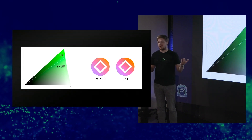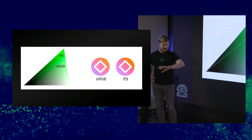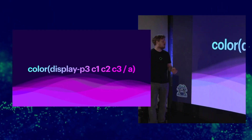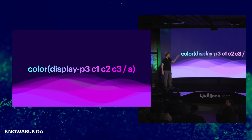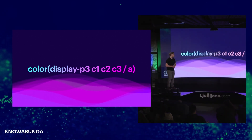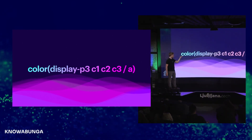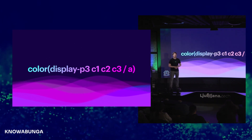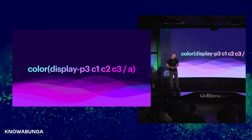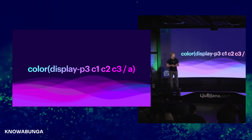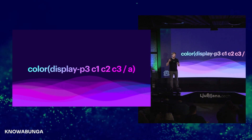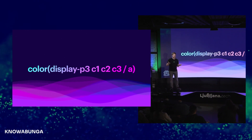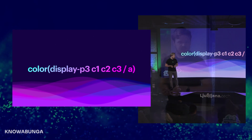If you want to go into wider color gamuts, you can technically use the color() function and tell it which color space you want to work with, for example P3. And then C1, C2, and C3 basically refer to the coordinates in that color space, similar to RGB, but not entirely the same.